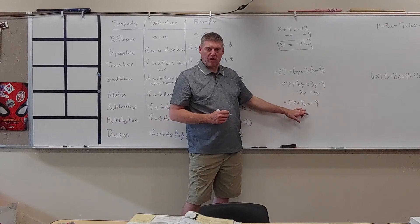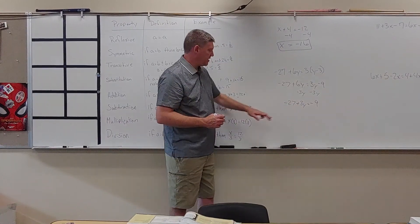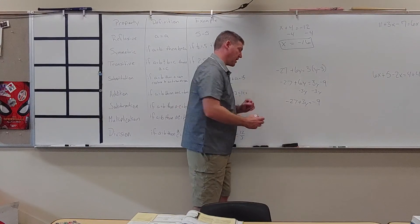Now, I have only one Y, so I'm going to isolate it. I'm going to take this 27 and get it to the other side. I'm going to use the addition property and add 27 to both sides.